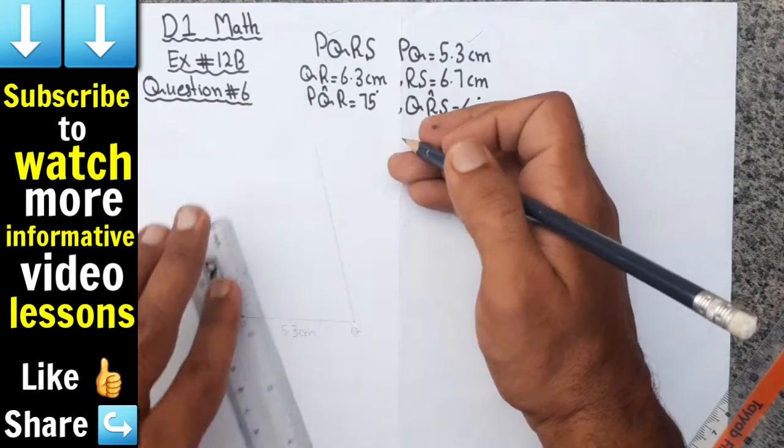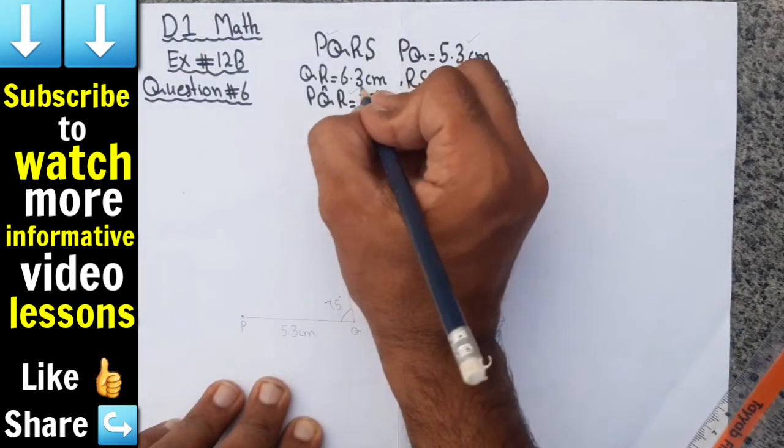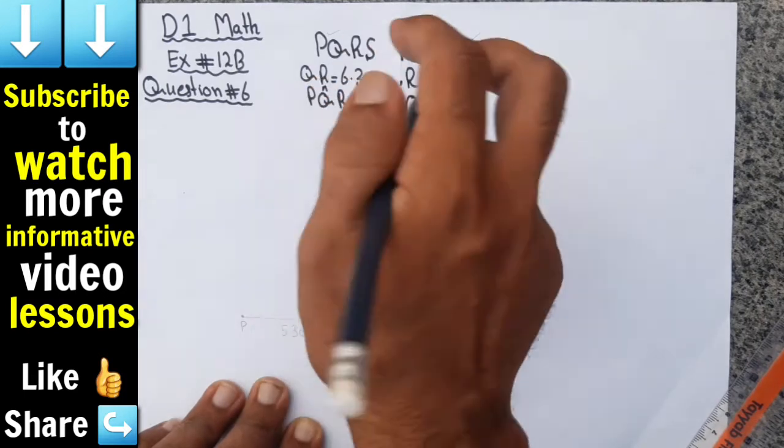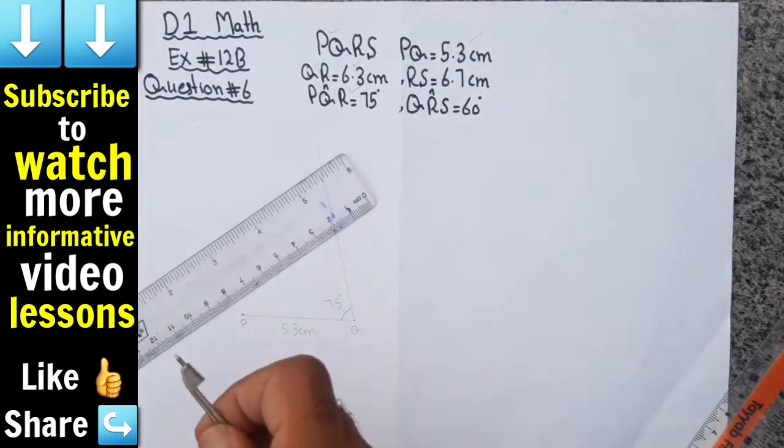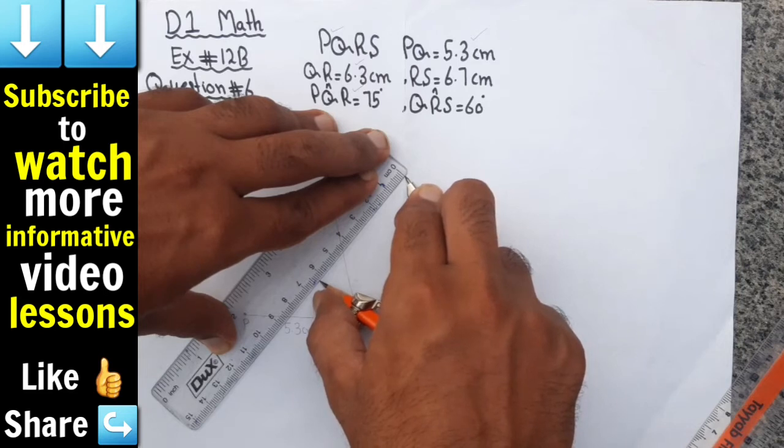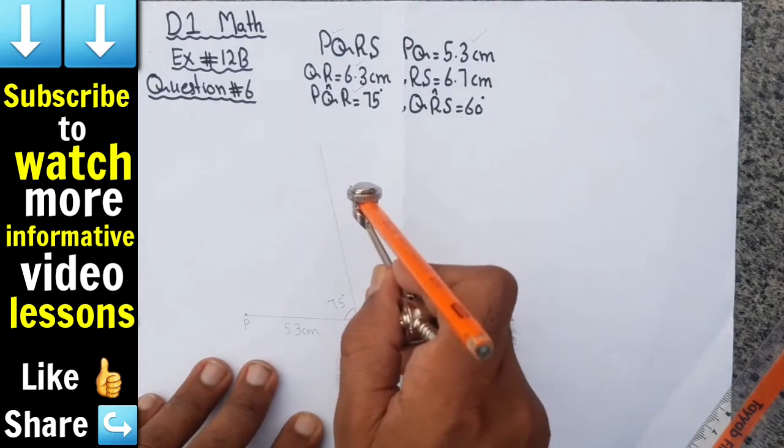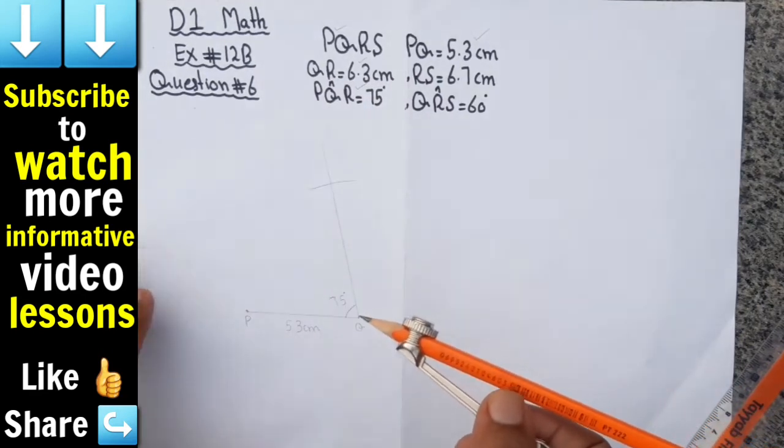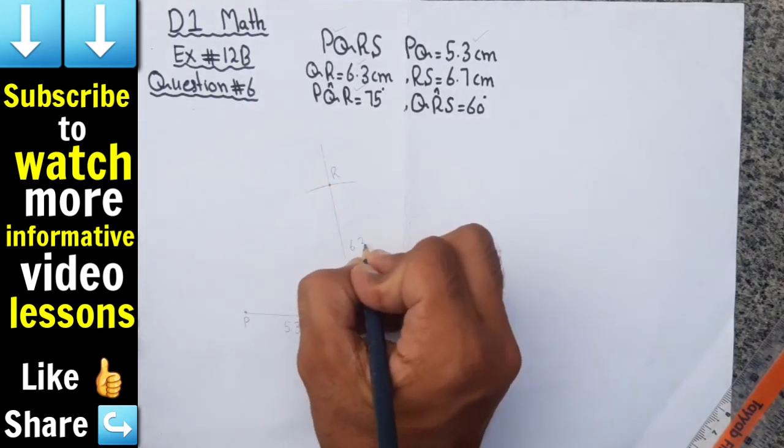Now we will draw an arc of 6.3 centimeter. We have to open the compass to 6.3 centimeter length. This is point Q and this now this point is point R. So this length is 6.3 centimeter.